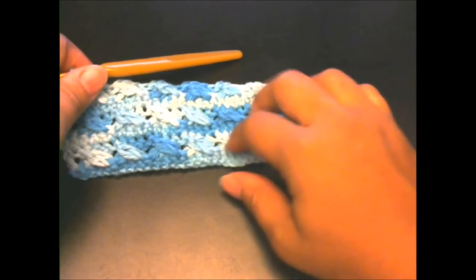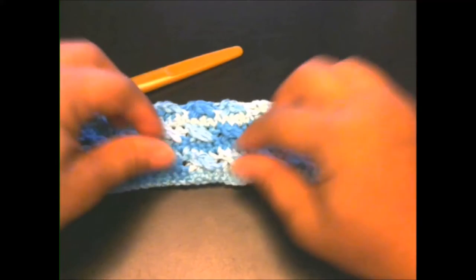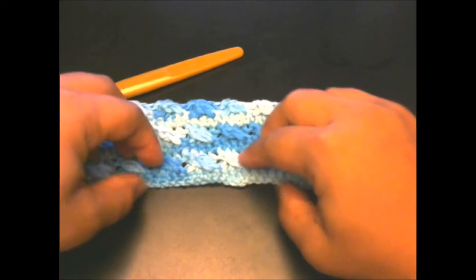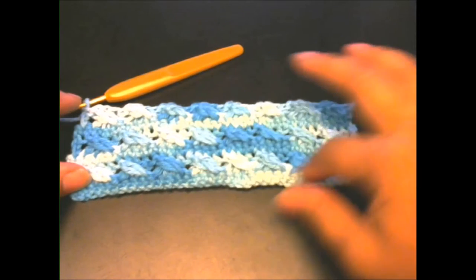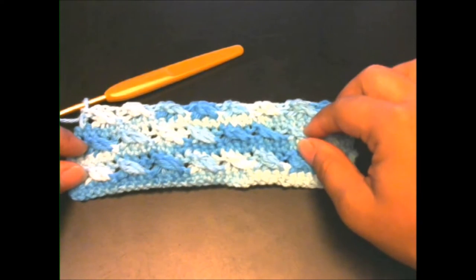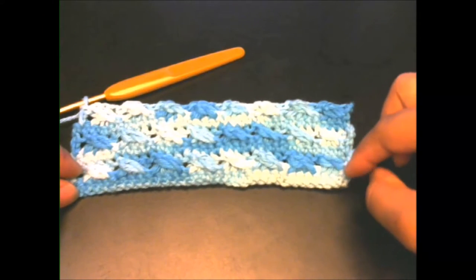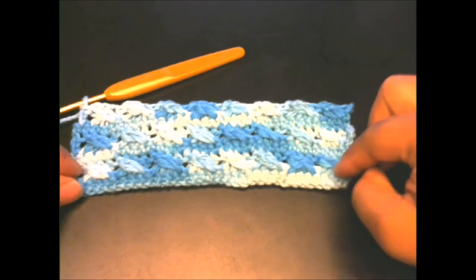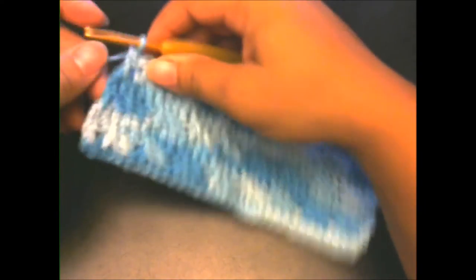Hello YouTubers, today I'm going to be showing you this cable stitched dishcloth. It's very easy and simple. The first thing I did was chain 35 using cotton lily yarn, and then I did one row of single crochet.